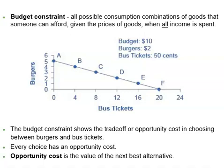If I'm like most people, I will choose some combination that includes both bus tickets and burgers — that is, some combination on the budget constraint between points A and F. For example, I can be at point B, where I have 4 burgers and 4 bus tickets per week. Or I can be at point D, where I have 2 burgers and 12 bus tickets per week.